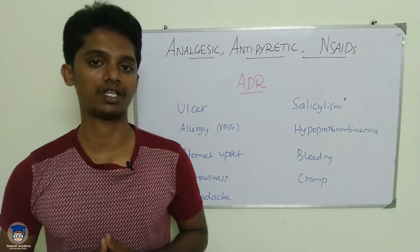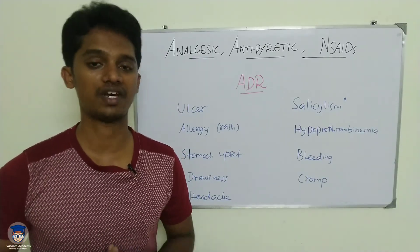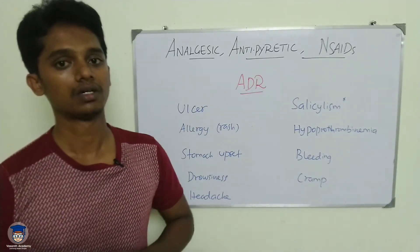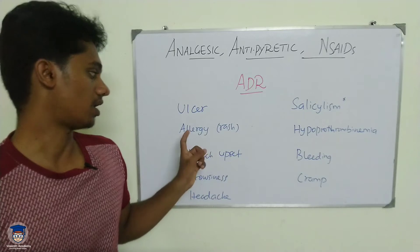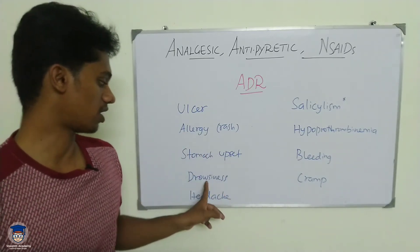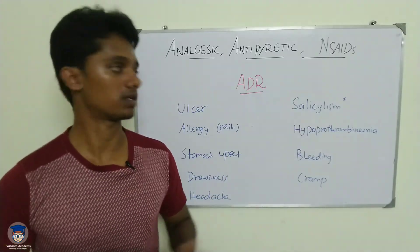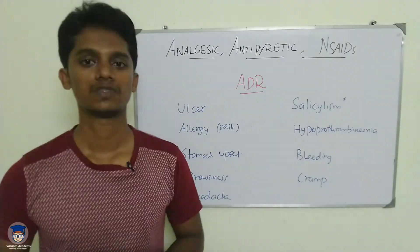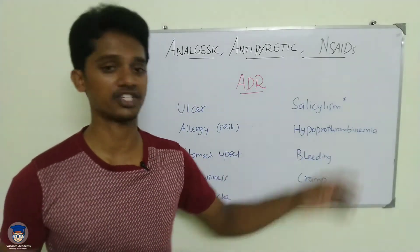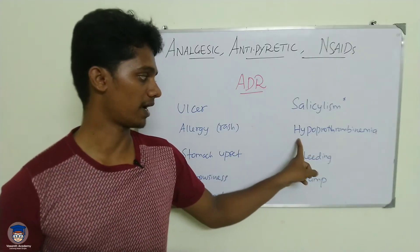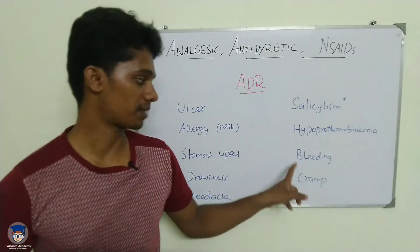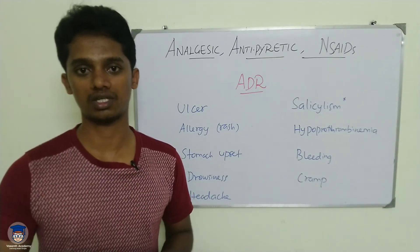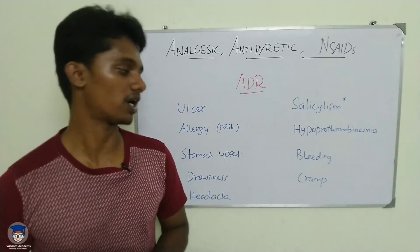The major adverse effect of aspirin is gastric ulcer — most NSAIDs damage the stomach lining, leading to lesion formation and ulcer development. Other adverse effects include allergy, rashes, stomach upset, drowsiness, and headaches. A specific adverse effect is salicylism, caused by high drug levels in the blood. Hypoprothrombinemia can also occur. Due to anti-platelet action, there is increased risk of bleeding and blood loss.